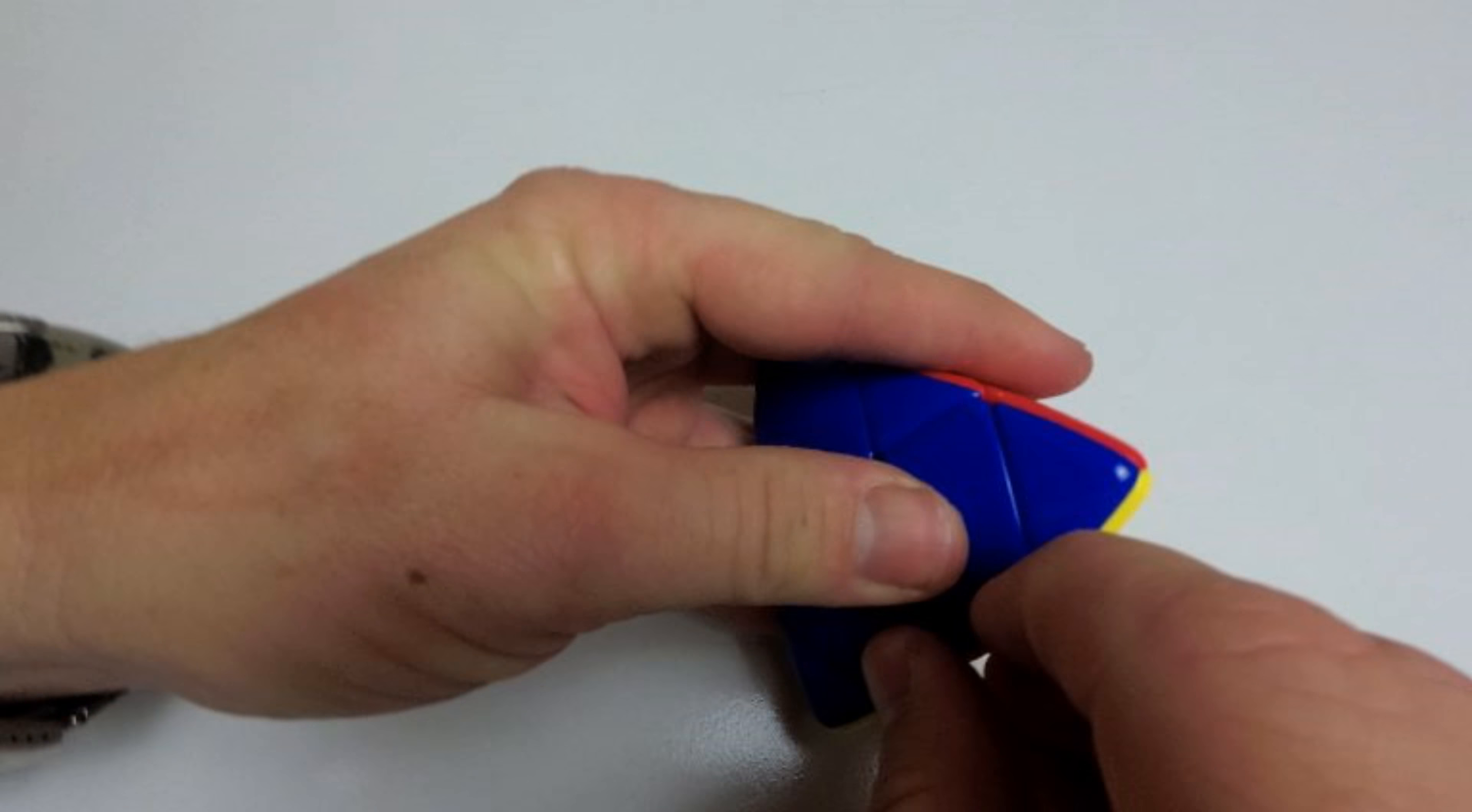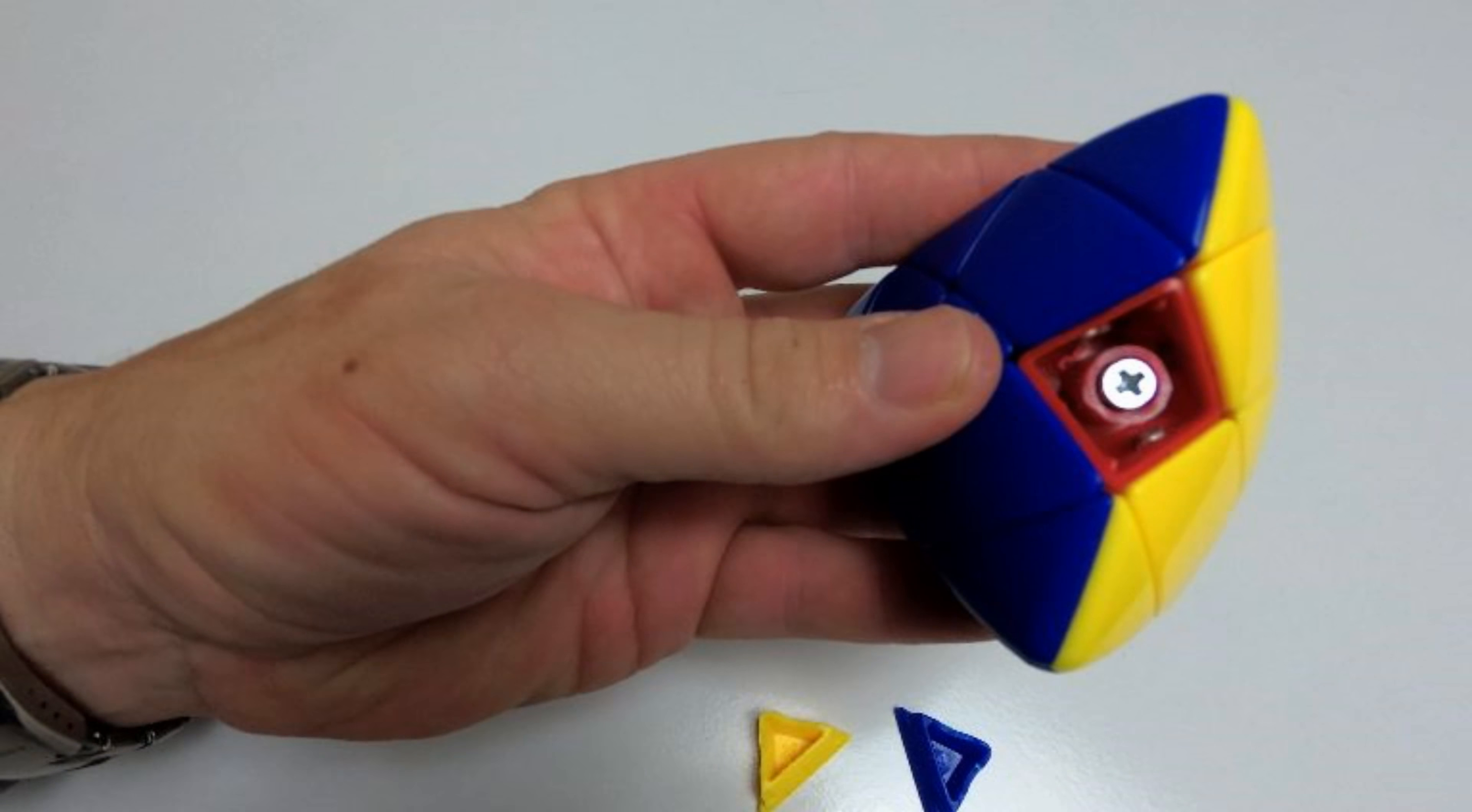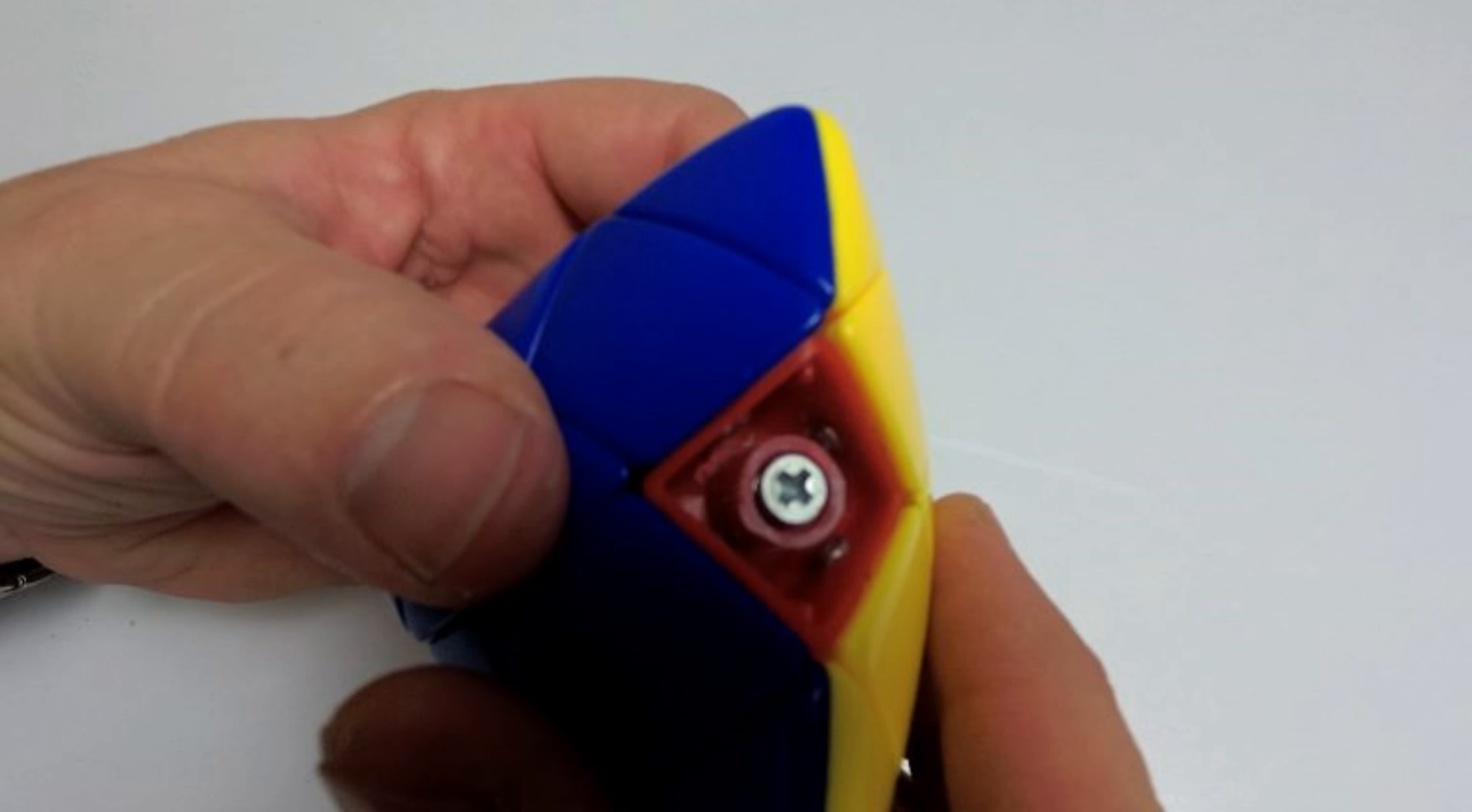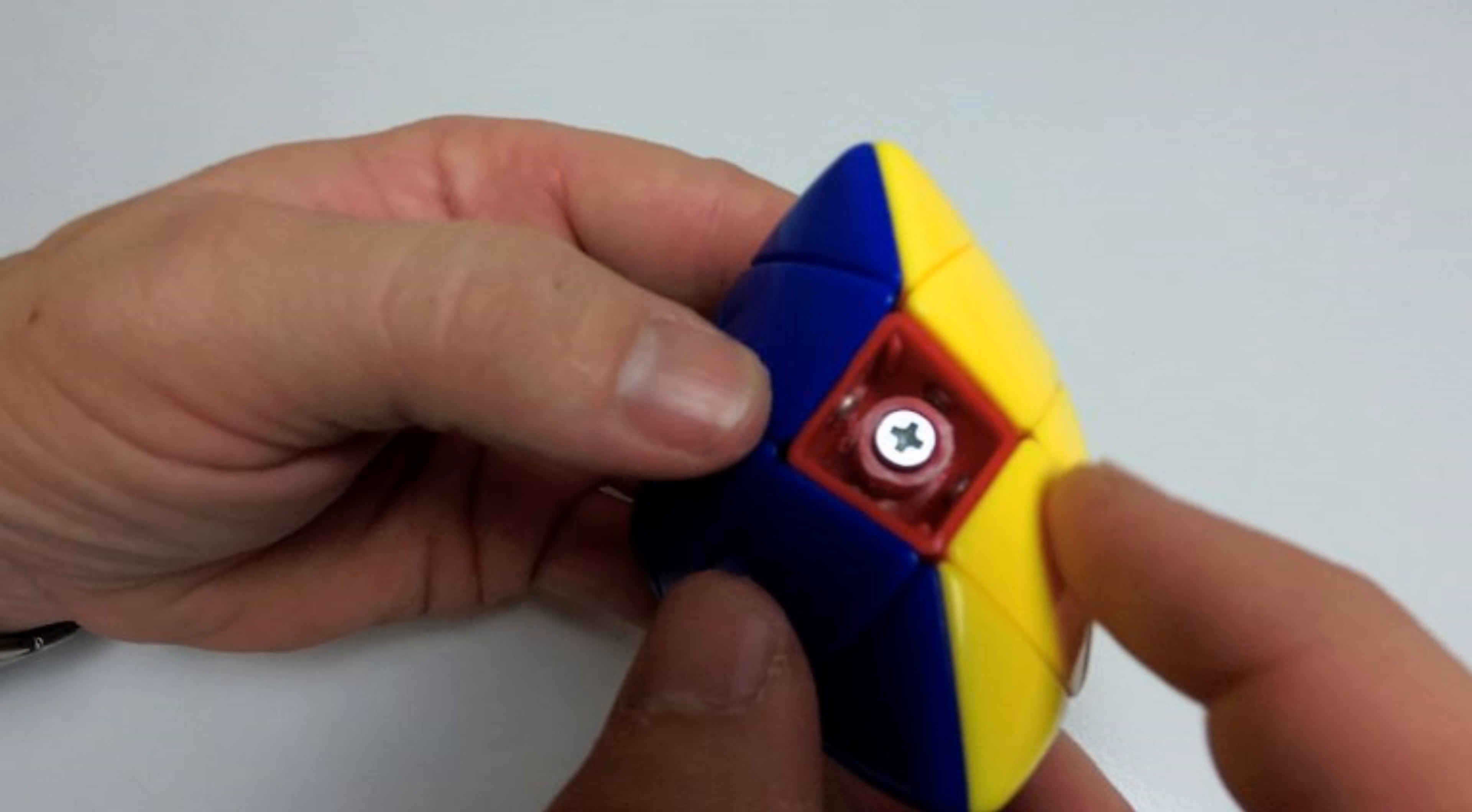So this will be a centre cap. Let me just get that off. And as you can see, there's the 4 magnets right inside going to each corner piece, or edge piece, sorry.